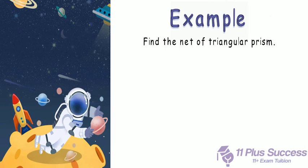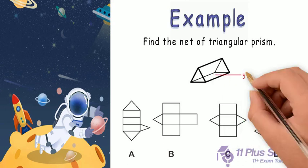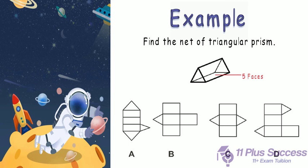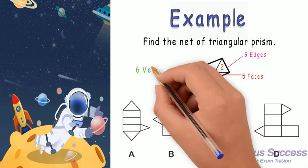For example, find the net of a triangular prism. A triangular prism has 5 faces altogether. Two faces are triangles which go on the ends, and the other three are rectangular. A triangular prism has 9 edges and 6 vertices.